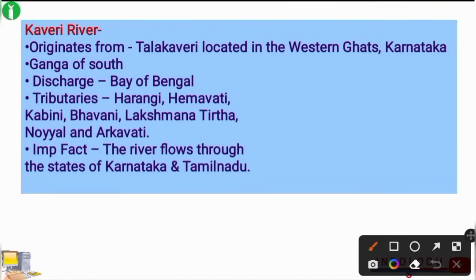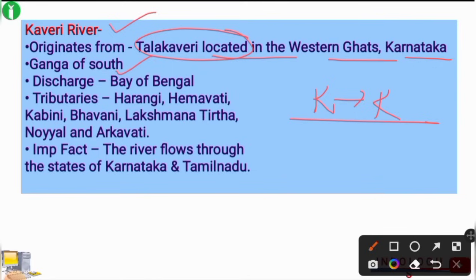The Kaveri River originates from Talakaveri, located in the Western Ghats, Karnataka. You can remember this as: K stands for Karnataka and K stands for Kaveri. Kaveri is known as the 'Ganga of South,' while Godavari is known as 'Vridha Ganga' or 'Old Ganga.' The Kaveri discharges into the Bay of Bengal. Its important tributaries are Harangi, Hemavathi, Kabini, Bhavani, Lakshmana Tirtha, Noyil, and Arkavathi. The river flows through Karnataka and Tamil Nadu.